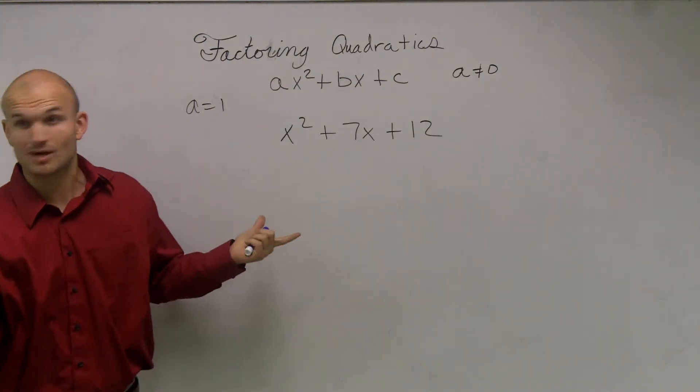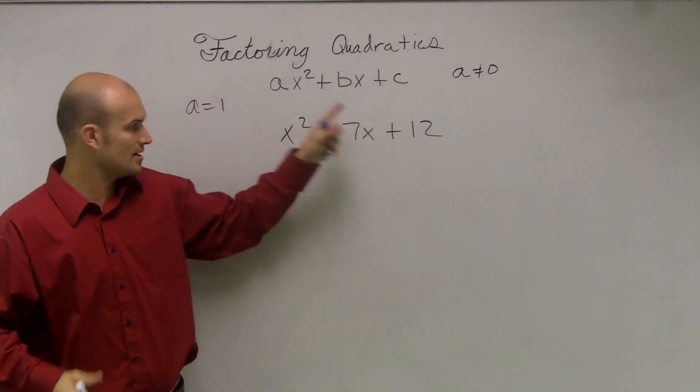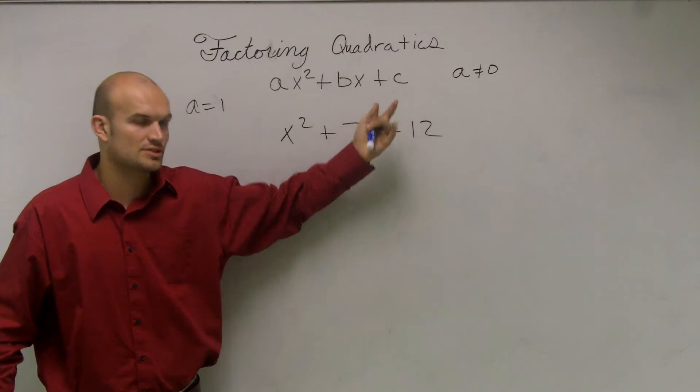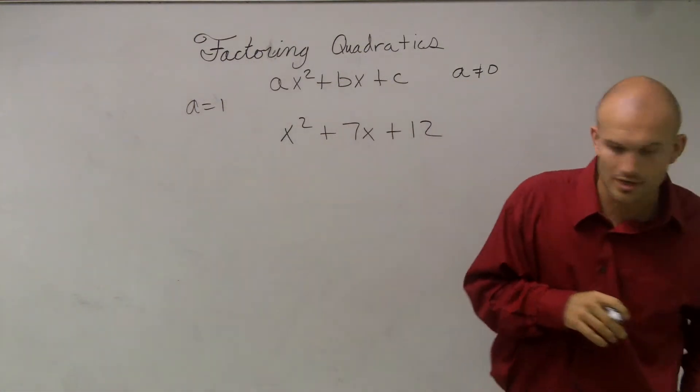So this is going to be the quadratic we're going to work with today. Is it a quadratic? Obviously, I said it was a quadratic, right? But we notice there's three terms. We have an x squared, and our three terms where each of our numbers is a coefficient. So we have a quadratic. It's a special type of trinomial.